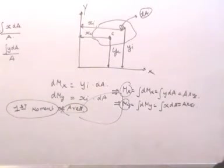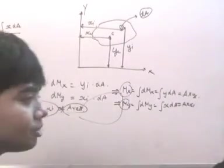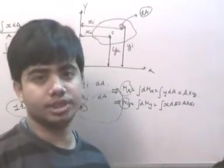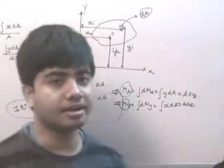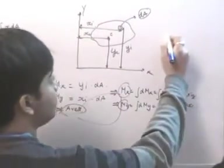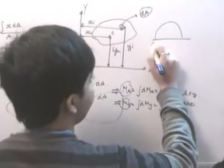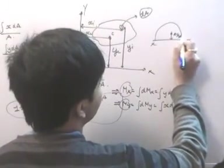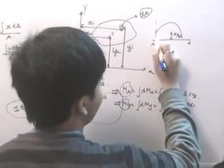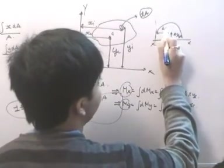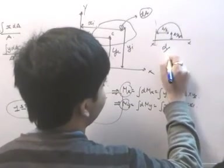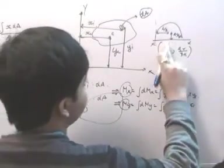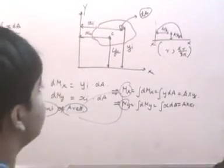You can find out the centroid of different cross sections. I am not going to do those derivations because they are straightforward; they can be seen from the book. For example, if you have a semicircle with this as the x-axis, then the center with respect to the x-axis is at a distance of 4r/3π, because it is unsymmetrical. With respect to the y-axis, the center is at a distance of r. So the coordinates of the centroid of a semicircle are (r, 4r/3π).